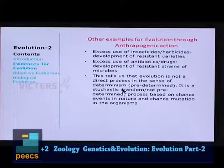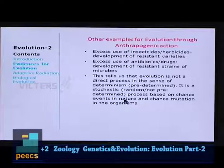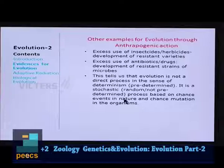This tells us that evolution is not a direct, predetermined process. Nobody has made plans for evolution — it is just happening by chance. It is a stochastic, random process based on chance events in nature and chance mutations in organisms. Evolution is not designed by anybody; it happens through chance mutations and chance changes in the environment.